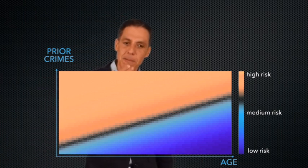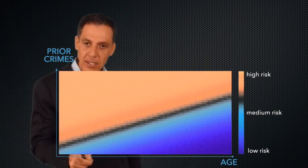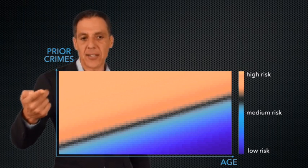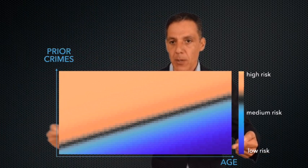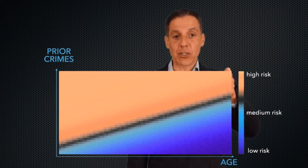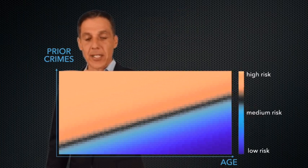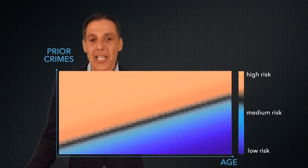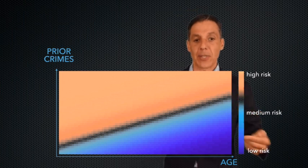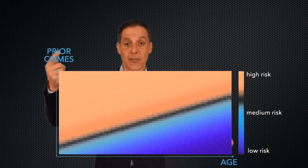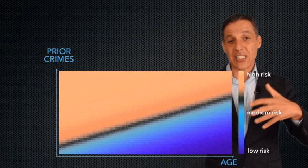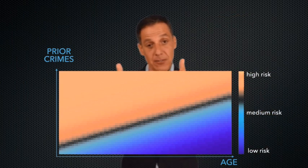So what is the classifier doing? If you are young and have a lot of prior crimes, you're at high risk — that sort of makes sense. And if you're old and have very few prior crimes, you are low risk. If you're old and have a lot of prior crimes, you're still at risk, but less so than if you are young. What's nice about our linear classifier is it's interpretable. We can reason about it because we know the data coming in, we were able to show this was the best classifier, and we can look at this space and intuit what the classifier is doing.